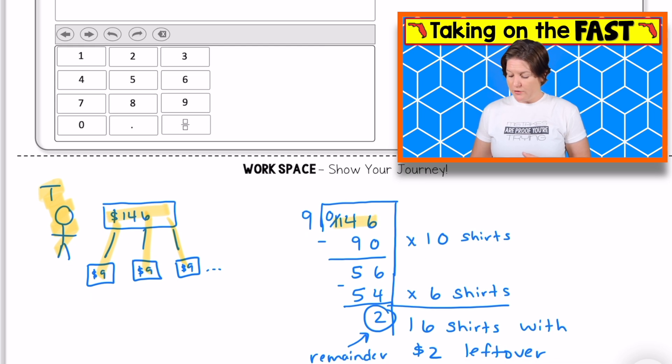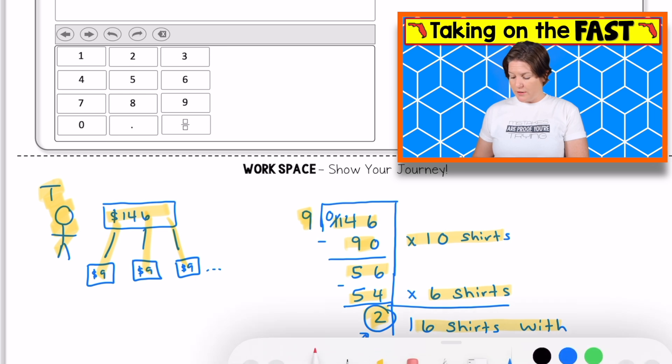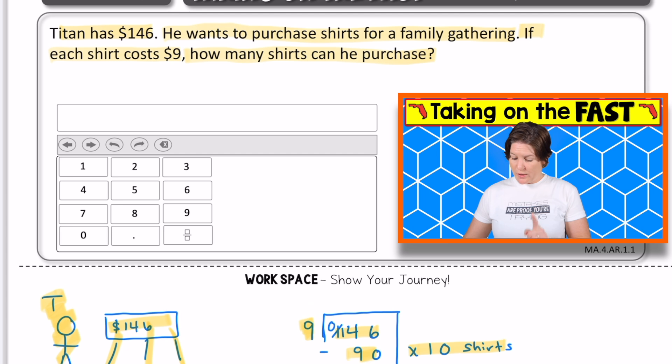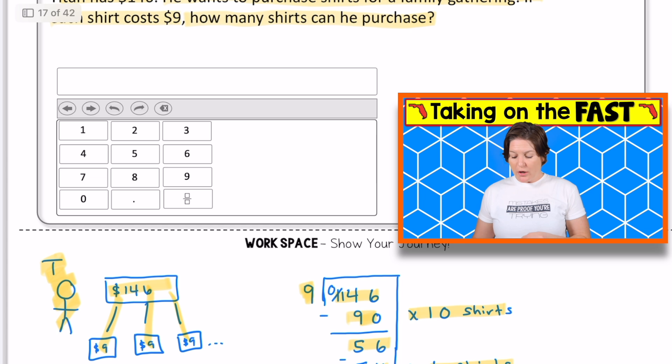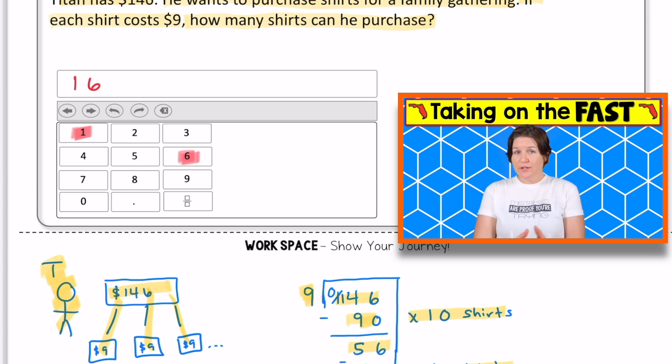So here is my work here with 146 divided by 9 using the partial quotients method. For my work, I just said, okay, I'm going to make 10 shirts, which would be $90, and that would leave me with $56. If he bought six more shirts, that would cost $54 with a remainder of $2. So 16 shirts with a remainder of $2 left over is the answer. But let's go back to the question. It says, how many shirts can he purchase? So we're not going to put 16 remainder two. There is no remainder button on the equation editor tool. You also cannot buy a fraction of a shirt. So we're not going to convert this into a fraction. Instead, the answer is just going to be the number of shirts that he can purchase. So that would be 16. To do that, we could either tap or type in 16, and the answer would populate right up there.